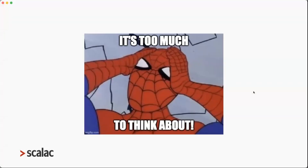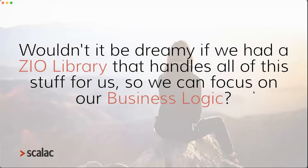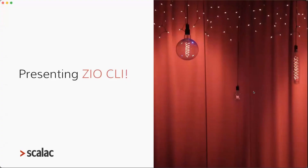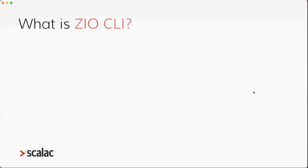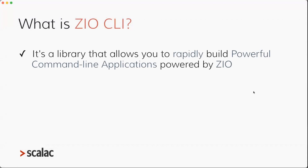So that's too much to think about, and it's not such a piece of cake as we might think initially. The question is: wouldn't it be dreamy if we had a ZIO library that handles all of this stuff for us, so we can focus on our business logic? And as many of you may already be guessing, that library is ZIO CLI. Here I'm going to introduce ZIO CLI and see how it can help us with all of that stuff we need to consider when implementing production-grade command line applications.